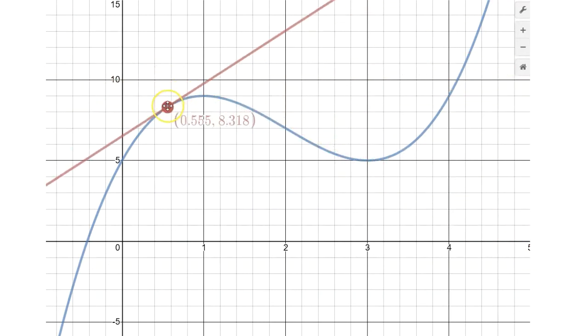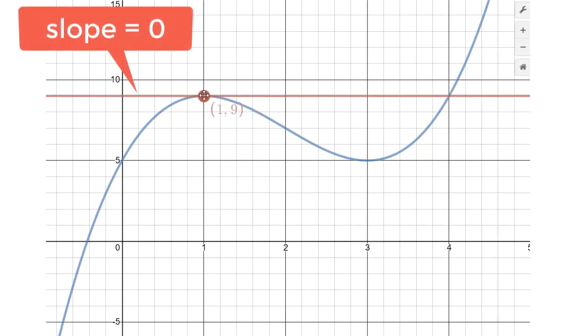So I see here when I move this particular point along this curve right about here I have a perfectly horizontal red line which shows us that in fact that slope here is going to be zero at this location.